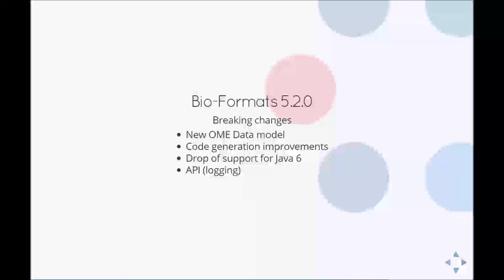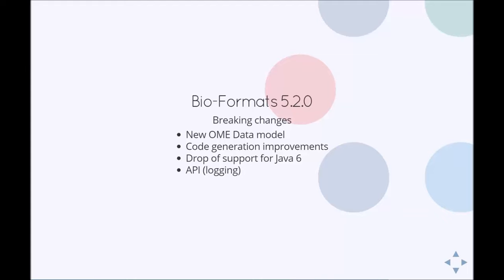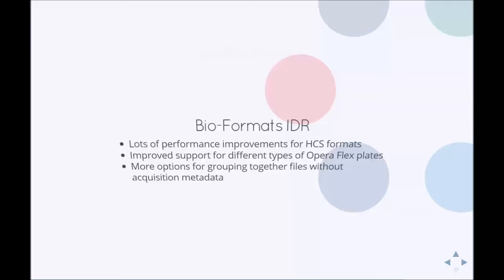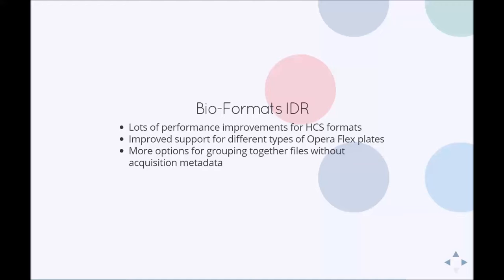On the 5.2 line, there has been a lot of work on the OME data model, some details of which will be covered later in the workshop. We've updated how the data model code is generated from the OME XML schema so that it is more intuitive and maintainable. Based on analysis of usage statistics, the 5.2 line removes support for Java 6, although this is still supported in 5.1.10. We've also made logging usage and configuration more consistent. On the IDR line, we've done a lot of work to reduce import and image loading times for HCS datasets, and the Opera FlexReader has been updated to allow for a wider range of acquisition types, including multiple runs of the same plate.